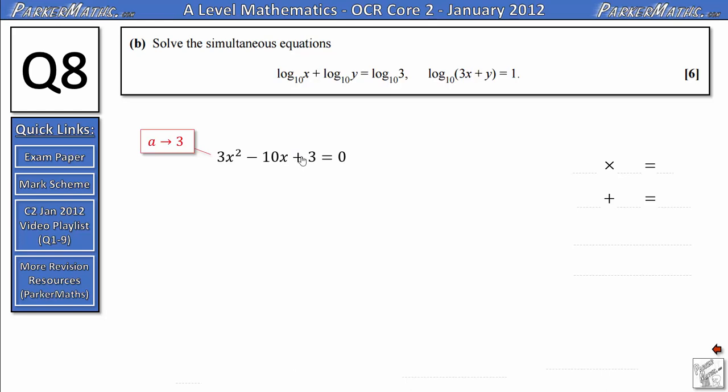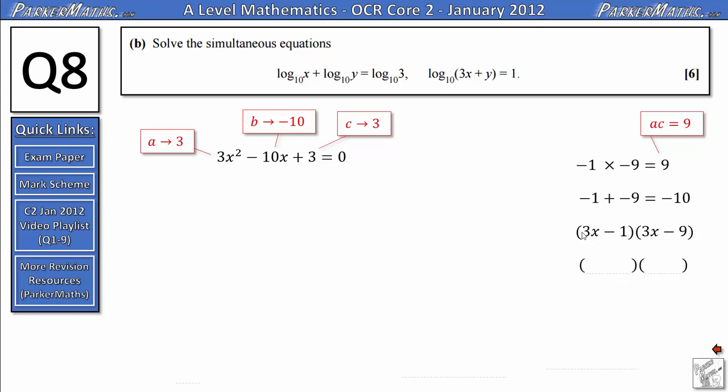To factorize this quadratic, we'll start by writing down our values for a, b, and c. I'm going to use a version of the ac method to factorize this quadratic. So a multiplied by c gives me 9. So I'm going to look for two numbers that multiply to make 9, and they're also going to add to make b, which is -10. In order to get two numbers that multiply to give a positive number and add together to give a negative number, they've both got to be negative. And they're going to be -1 and -9. I'm going to start by putting 3x in both brackets, and the other terms will be -1 and -9. Next, I'm going to look if I can cancel down any of these brackets. This one has no common factors, so we'll leave that as 3x - 1. But this one has a common factor of 3. So I can divide by 3 and get x - 3. Back in my main body of working out, I'm going to get (3x - 1)(x - 3) = 0.